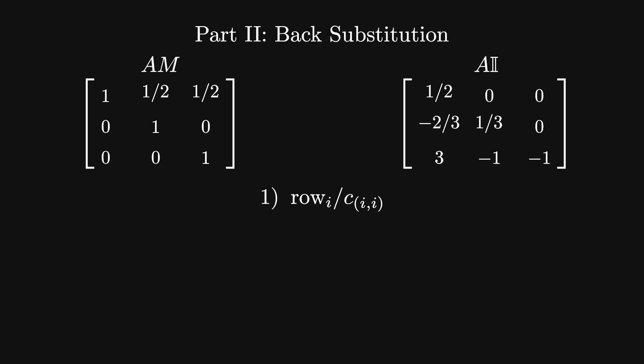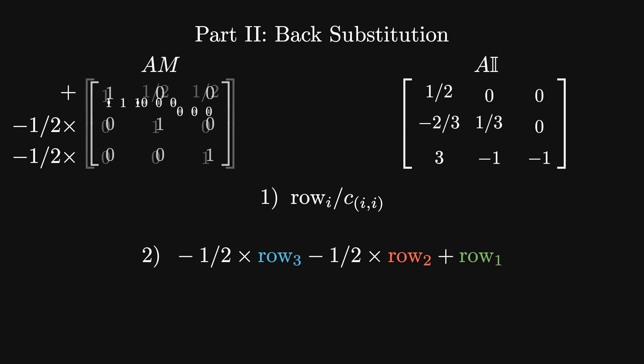Next, we start at the last row and eliminate the last entry from the next to last row. Here, it's already zero, so we don't need to do anything. Then we move up to the third row from the bottom, which happens to be our first row, and multiply its second coefficient by the second row and its third coefficient by the third row, and subtract them from the row in question. In our case, this amounts to dividing both rows two and three by minus 2 and then adding them to row one.